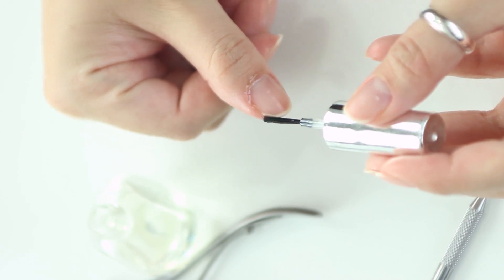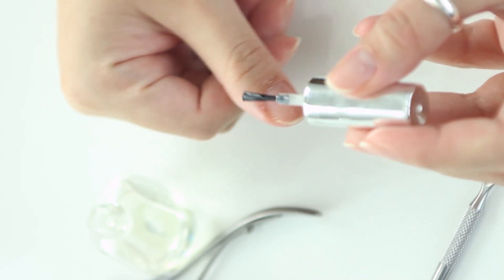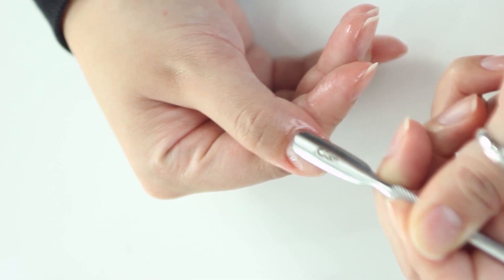First instead of using an orange stick you can push with a metal pusher to push back all the cuticles. And then you want to use a cuticle nipper.